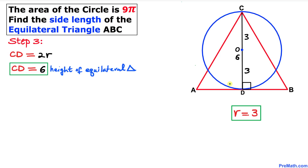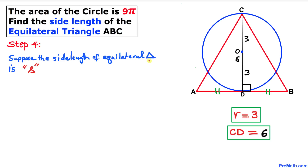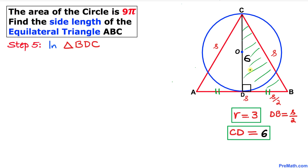Since triangle ABC is equilateral, all sides are equal in length, so line segments AD and DB are equal. Let's suppose the side length of the equilateral triangle is S. Since D is the midpoint of AB, DB equals half of AB, so DB = S/2.